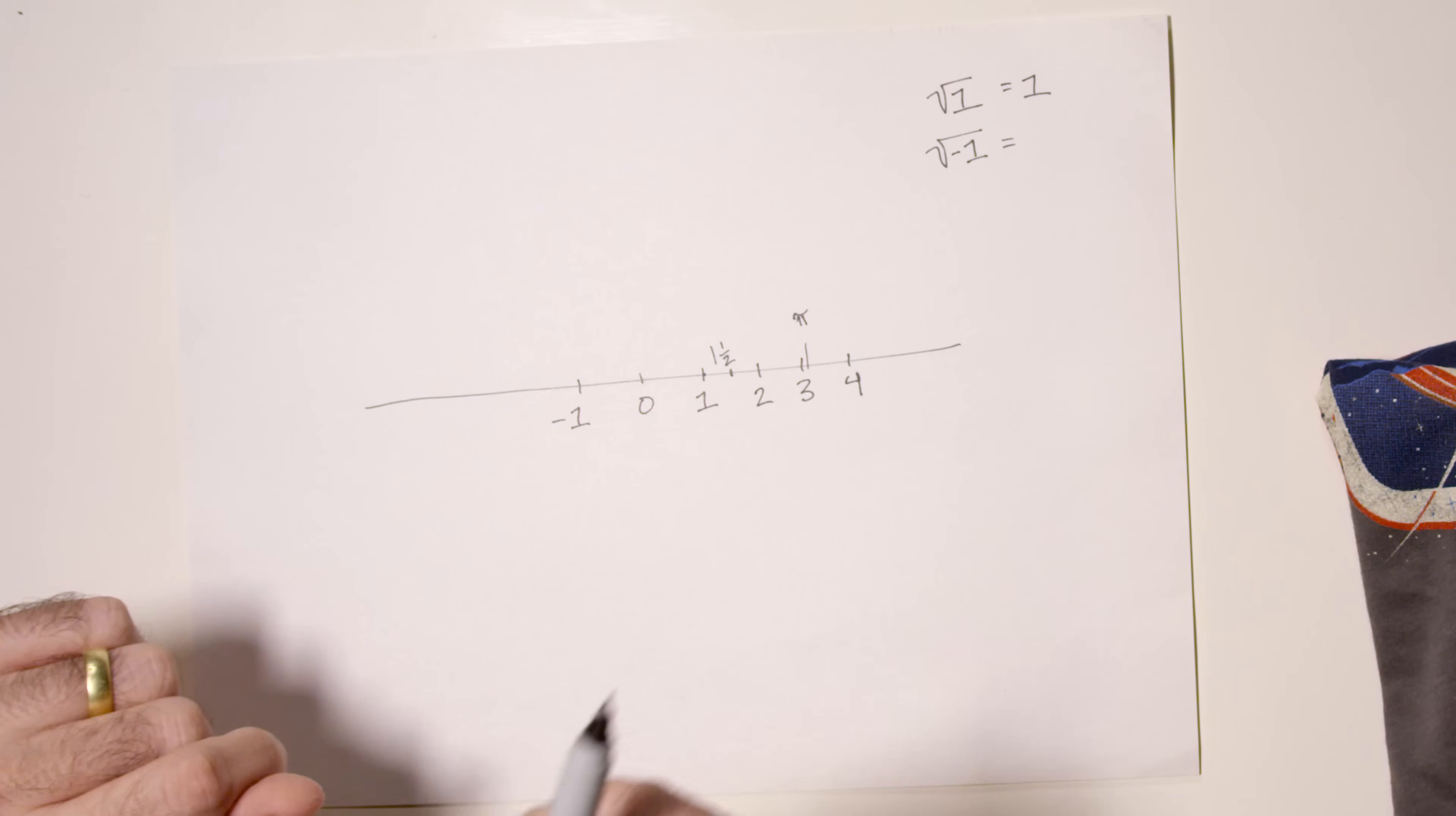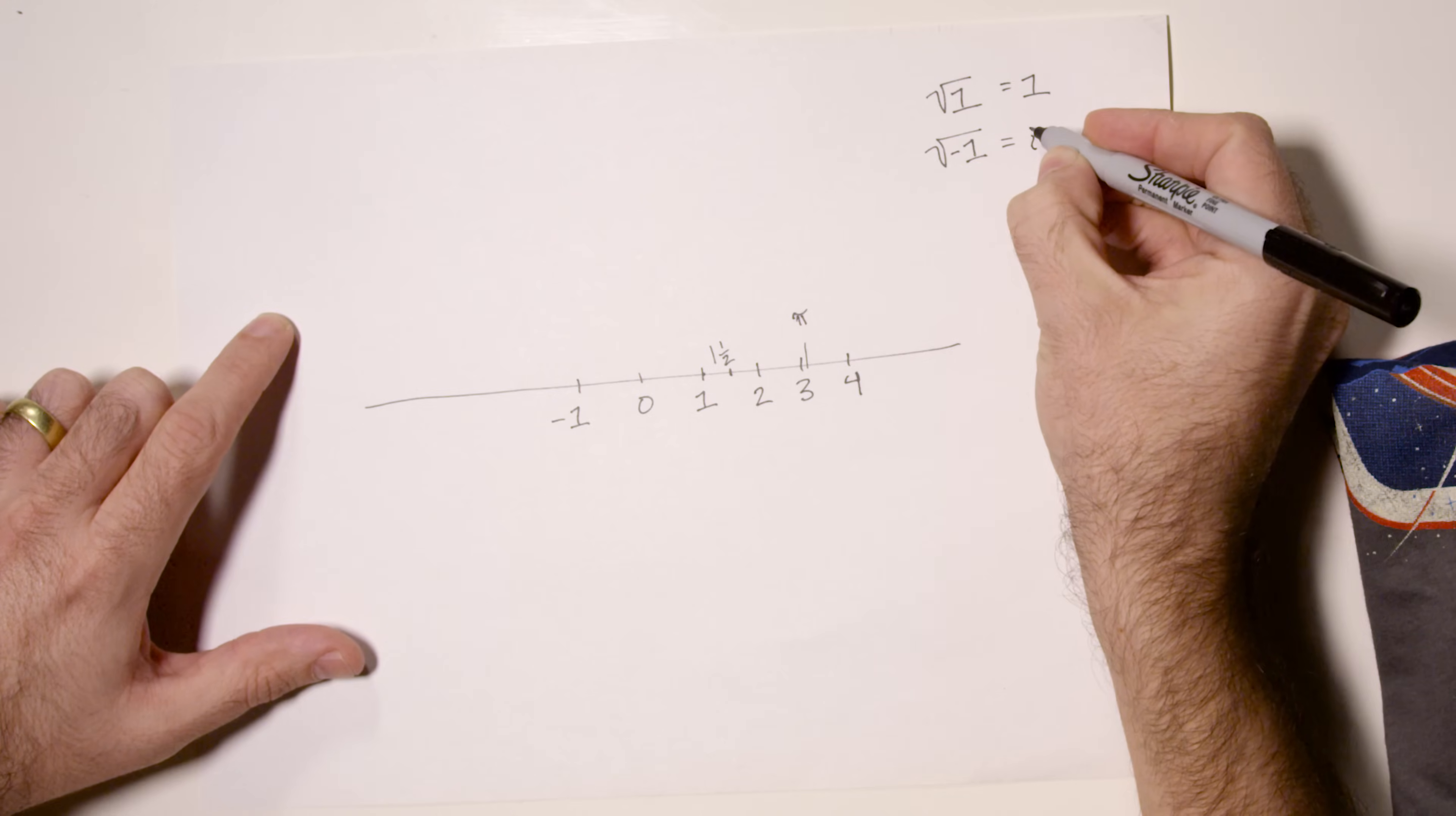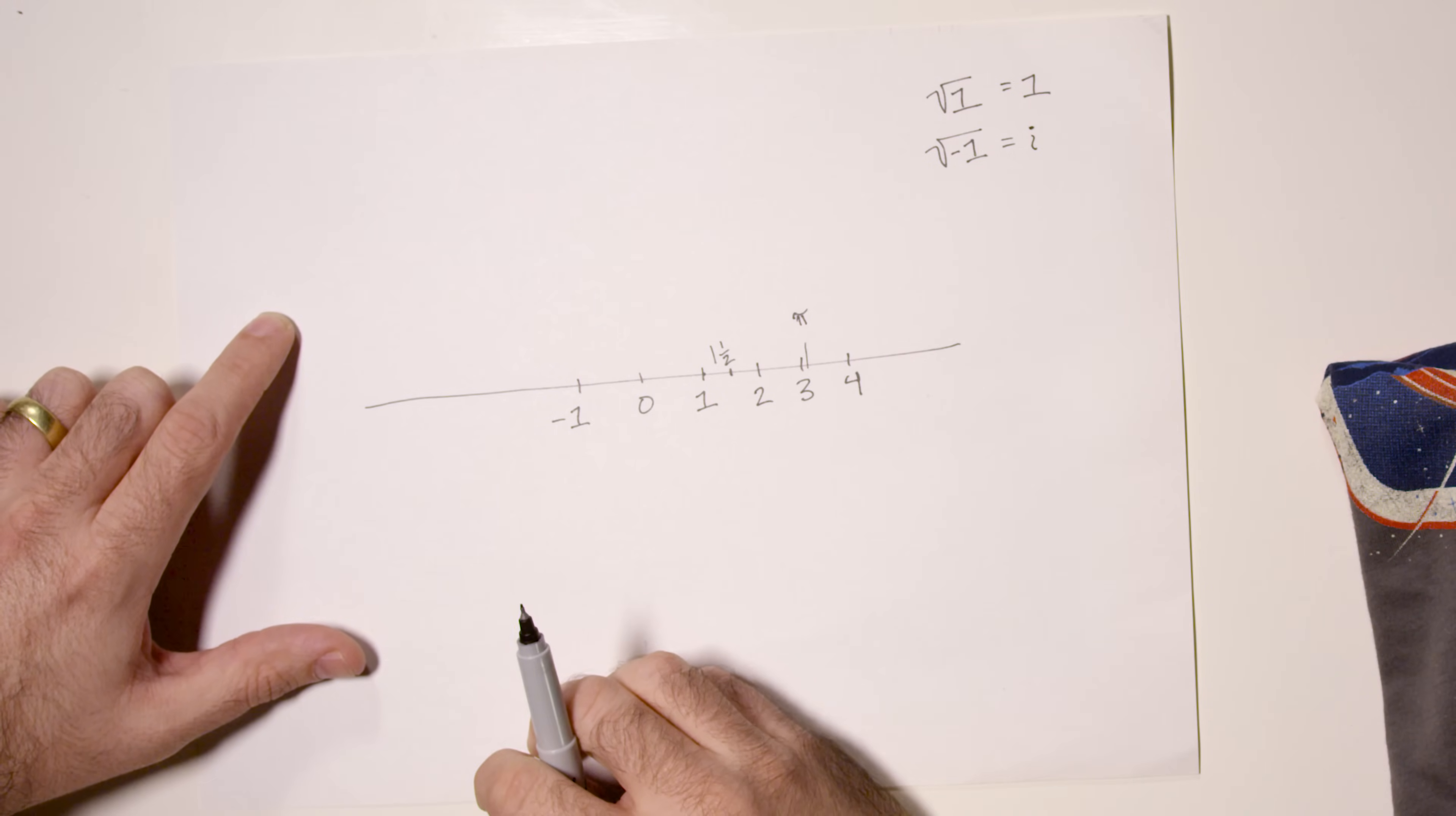So the square root of negative 1 may not exist but mathematicians have found it very useful, very powerful to say that the square root of negative 1 is a number. It's a number called i. i for imaginary. And probably someone said, yeah but i is a letter not a number. And they were like, stop it.